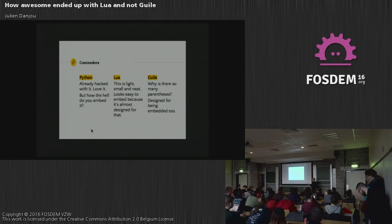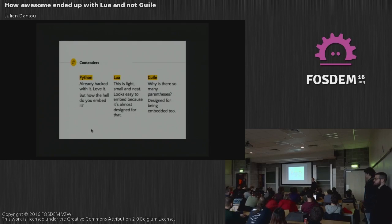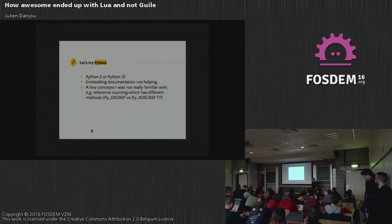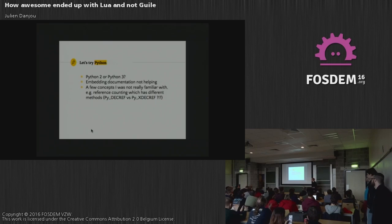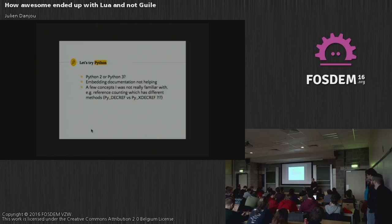Guile is designed for being embedded, at least it was at first, even if it was weird to be used in things like Emacs. I tried Python — Python 2 vs Python 3, that was a question in 2008 and it's still a question today. Back at the time I was confused. Python is not really designed to be embedded, the documentation was sparse, and the C code was a bit obscure with a lot of talk about reference counting I wasn't familiar with. So I ditched Python pretty quickly.